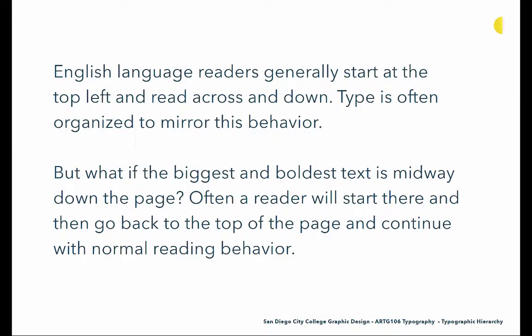English language readers generally start at the top left and read across and down. Type is often organized to mirror this behavior. But what if the biggest and boldest text is midway down the page? Often a reader will start there and then go back to the top of the page and continue with normal reading behavior. So our default is really top left and then reading down and across, but we can change that order by playing with hierarchy — by adjusting scale, size, or placement of type to make us read things in a different order than we would expect.